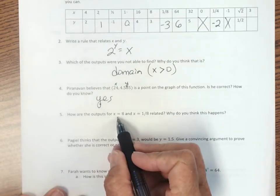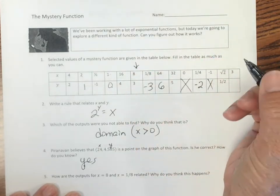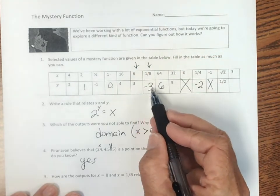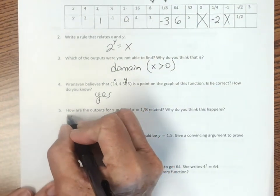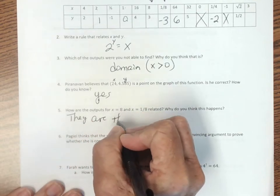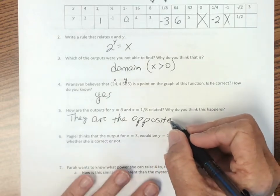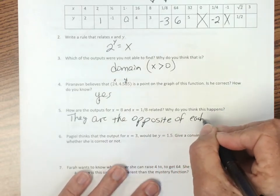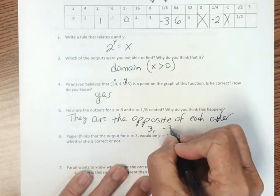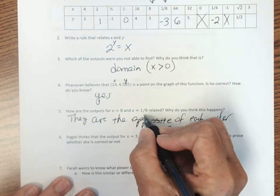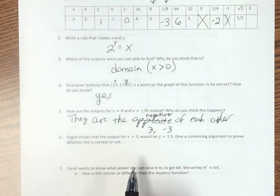So how are the outputs for x equals 8 and x equals 1 eighth related? So this one and this one. Well, they're just the negatives of each other, right? So they are the opposite of each other. So 3 and negative 3. And opposite's not quite right. The negatives is a better word.